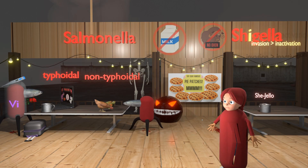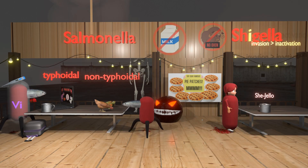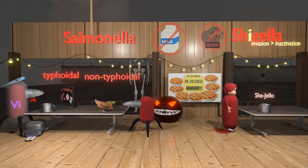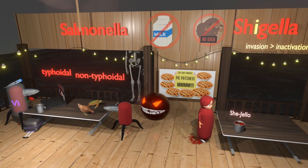Shigella is on one side of the room and Salmonella is on the other, and we divide Salmonella into the non-typhoidal and typhoidal types. Before we talk about the differences between Shigella and Salmonella, let's talk about their similarities, besides the fact that they're both gram-negative rods.